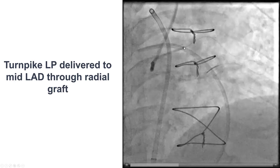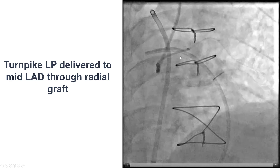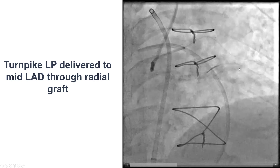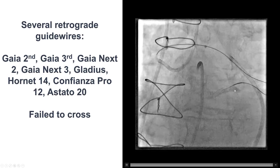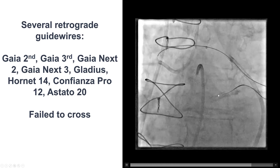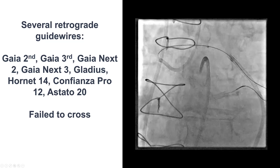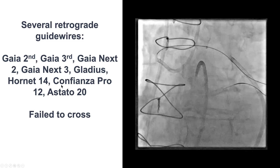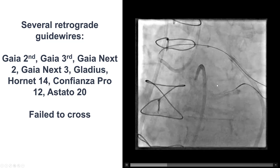So we went retrograde. We used a Turnpike LP microcatheter and also had a guide extension. We did multiple attempts to cross retrograde through the stents. The stents did provide a good outline of where the occlusion was; however, it was an extremely challenging lesion to cross. Several wires — Gaia 2nd, 3rd, Gaia Next 2nd and 3rd, Gladius, Hornet 14, Confianza Pro 12, and Astato 20 — all failed to cross.